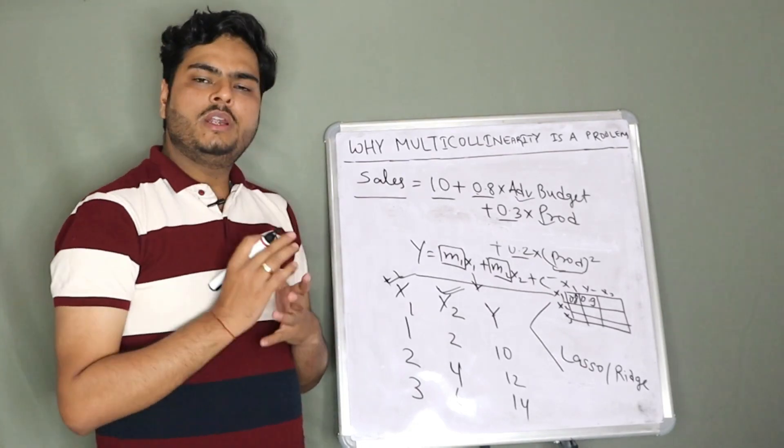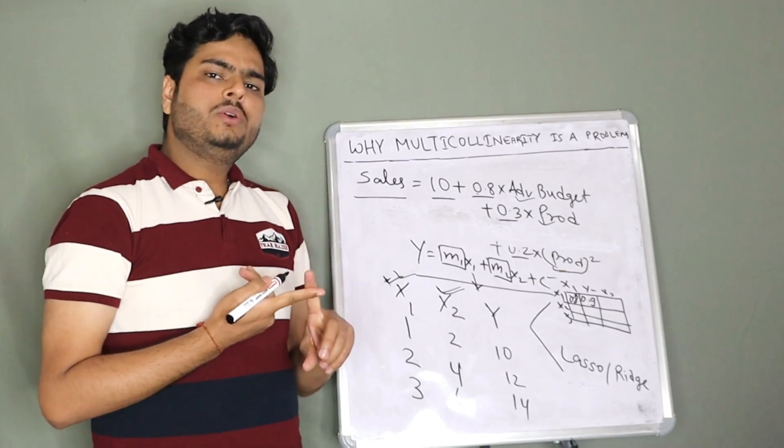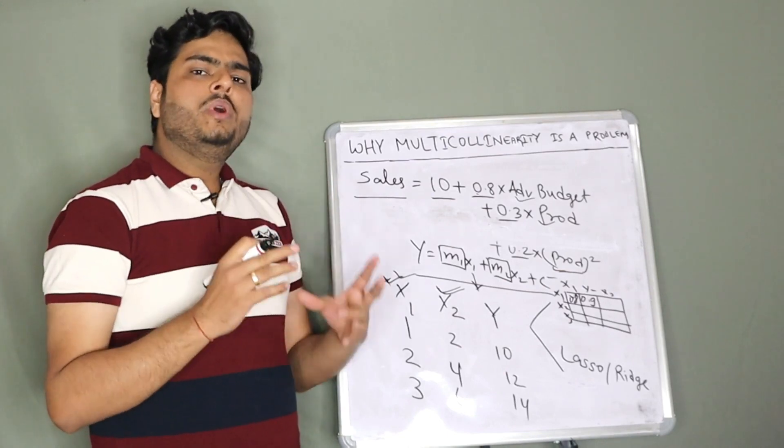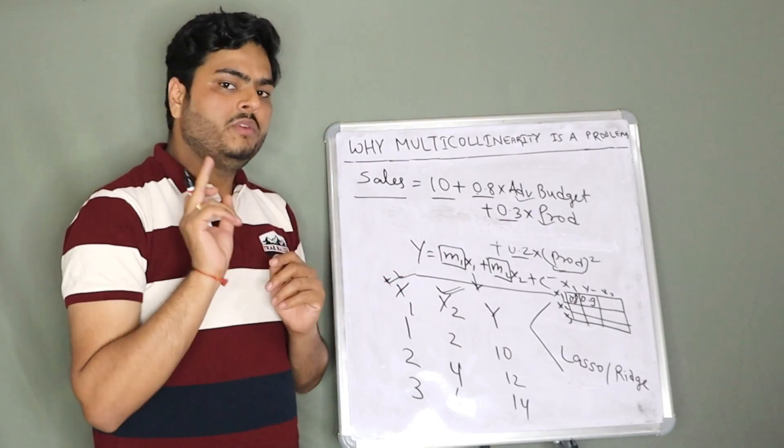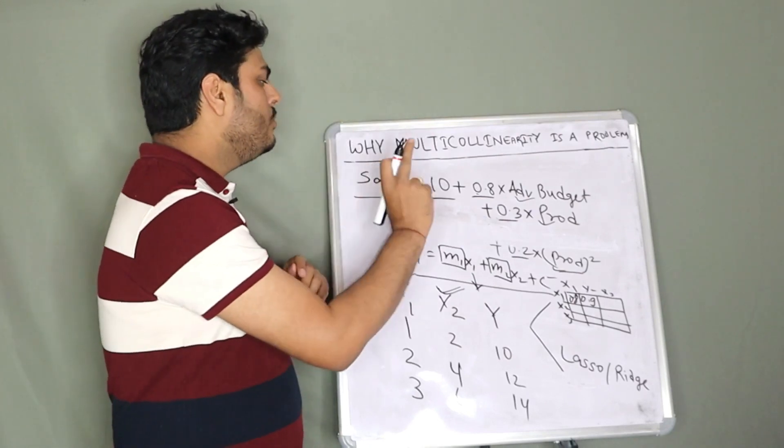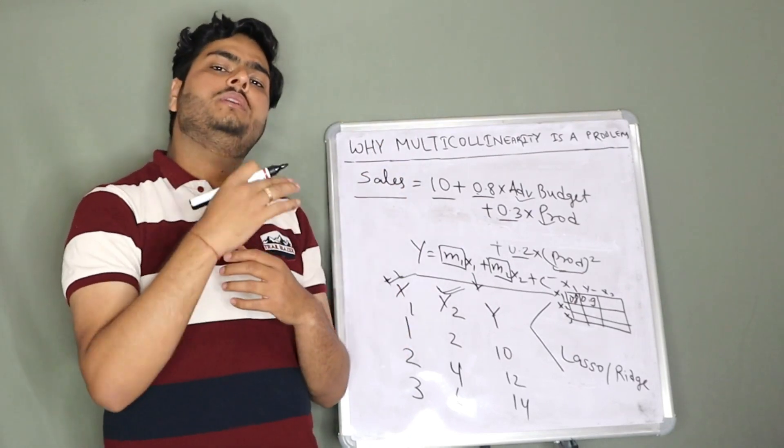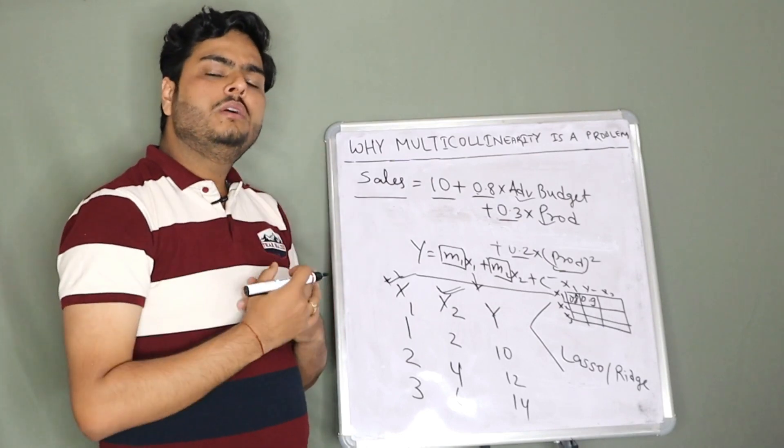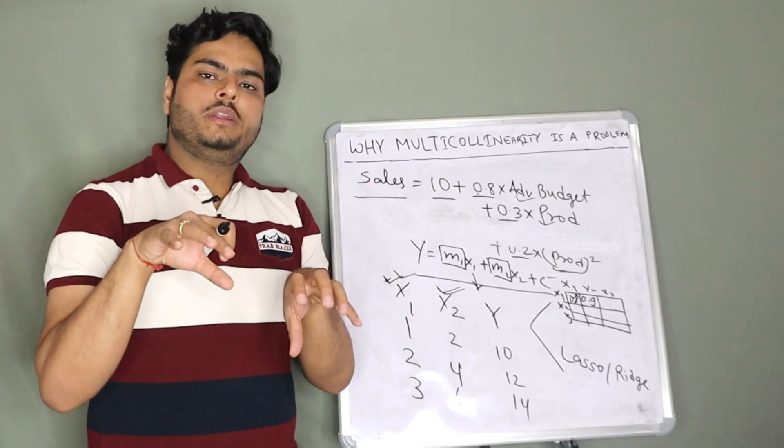I will just reiterate what all we learned in this video. What is multicollinearity? A phenomenon where two variables are highly correlated in the data—independent variables. What are different ways in which multicollinearity can occur? Data-related, structure-related.